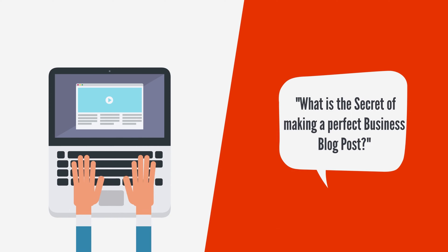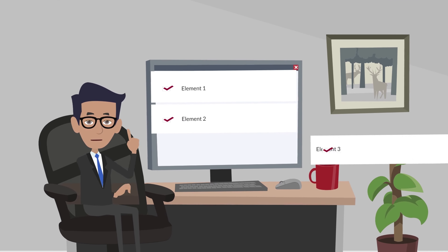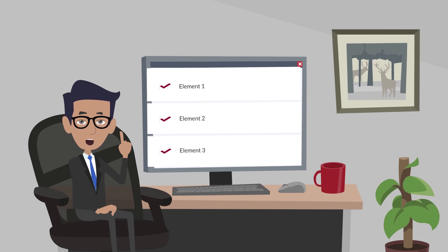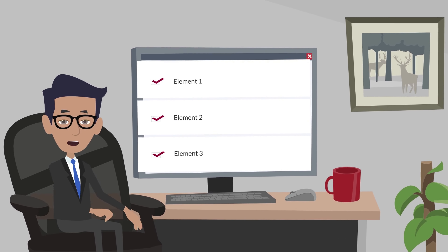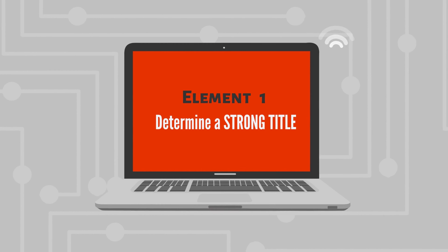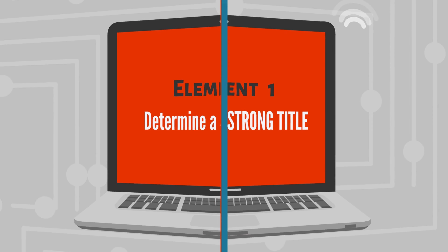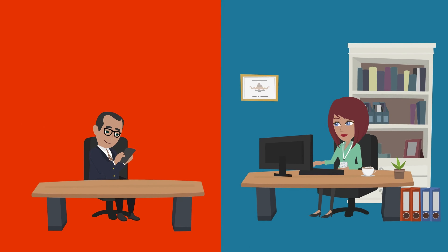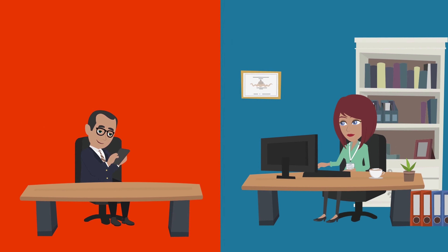What is the secret of making a perfect business blog post? This short video will explain what ingredients are needed to make it happen successfully. Element one: determine a strong title — hit the point and make it beneficial for potential readers.